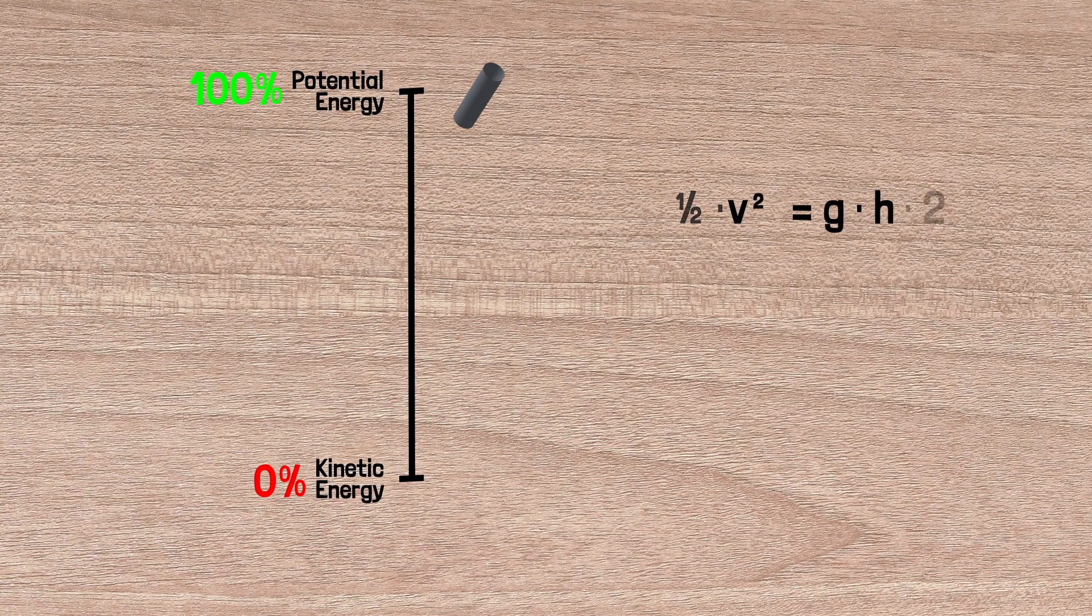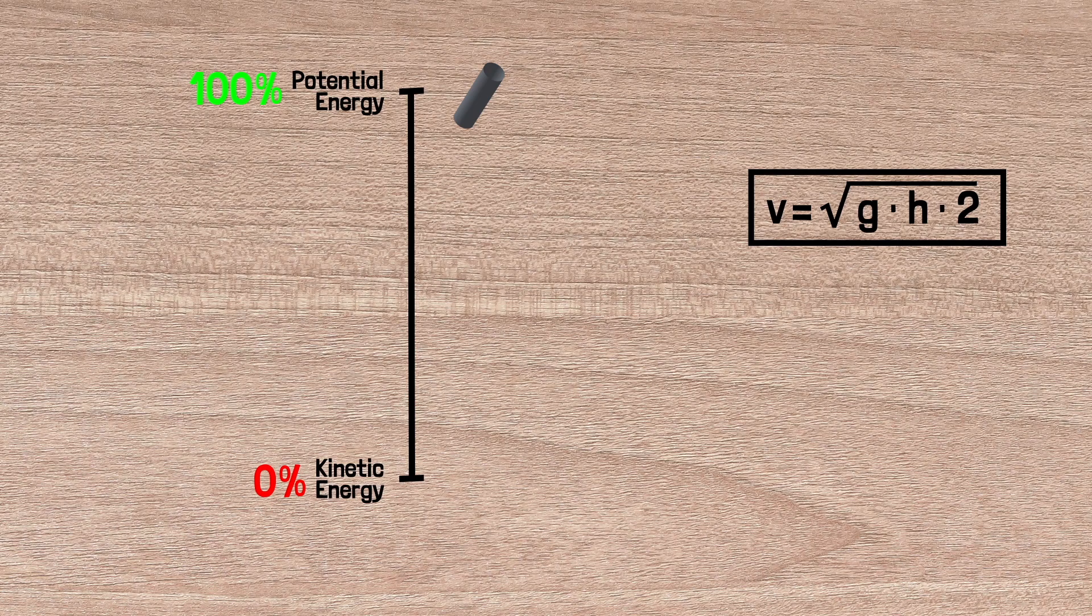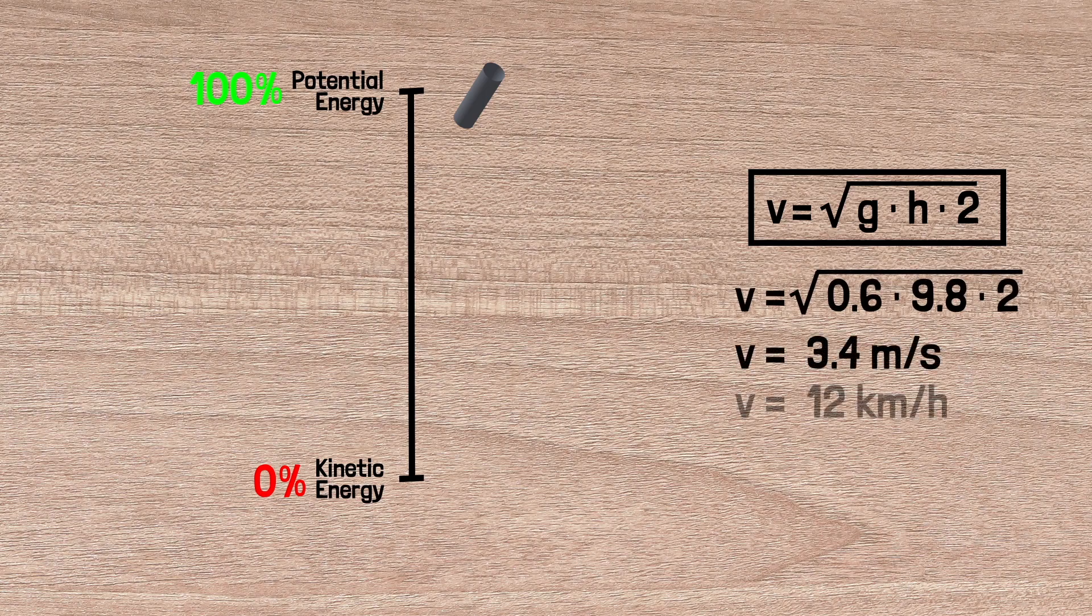I measured that the projectile went approximately 60 cm high, so if I sub that into the equation, I get a speed of 3.4 meters per second, or 12 km per hour, or 7.5 miles per hour, which is just in the sweet spot of being not too dangerous that you can't play with it, but not too not dangerous that it's not fun.